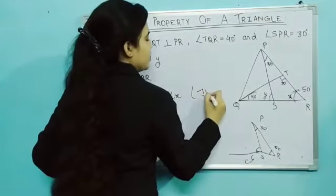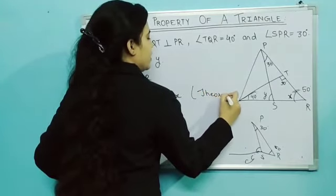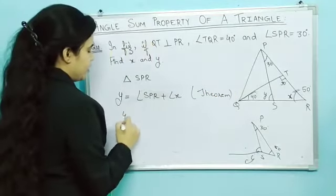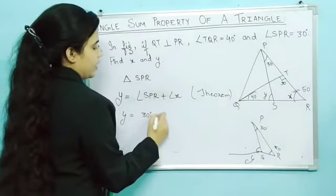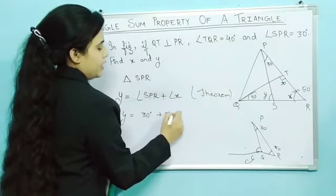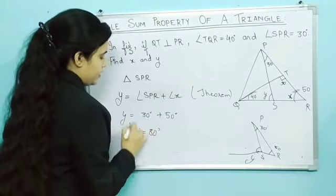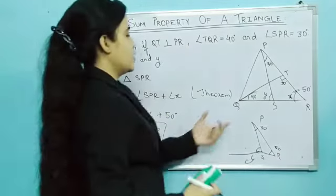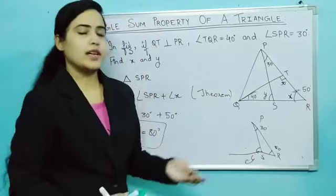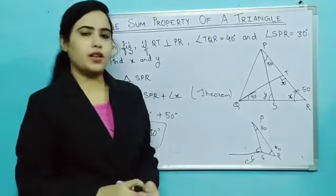From the theorem this conclusion will come. So SPR is 30 degrees and x value we just found was 50 degrees. So Y value will be 80 degrees. So we have found this. So what did we find? Using both theorems, we found the values of x and y.